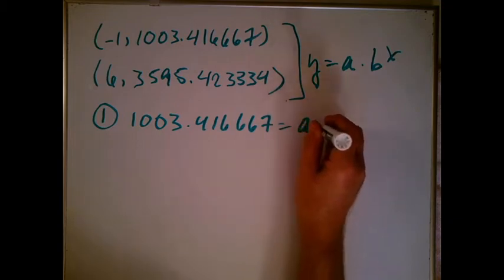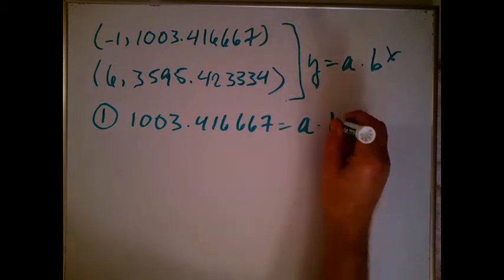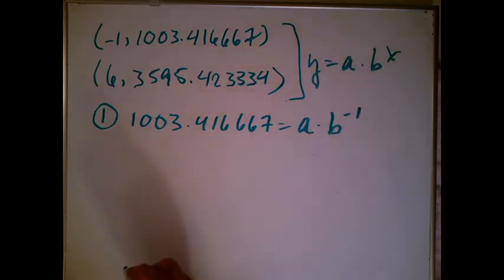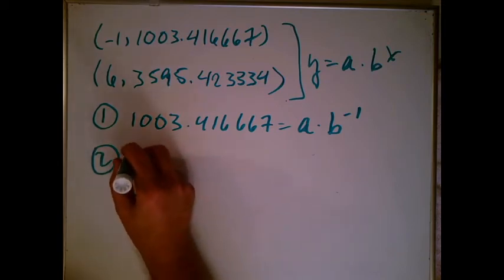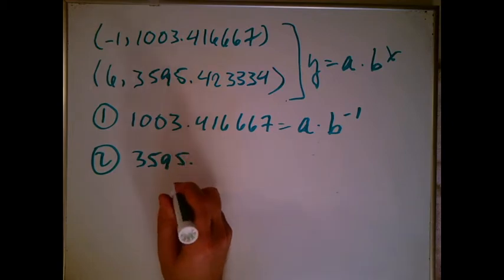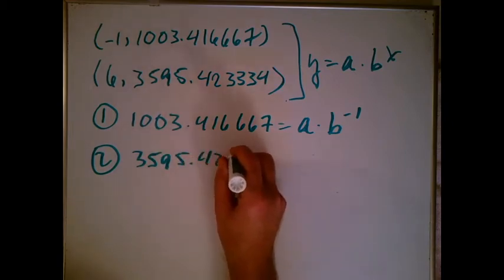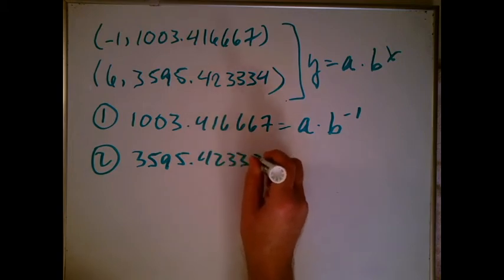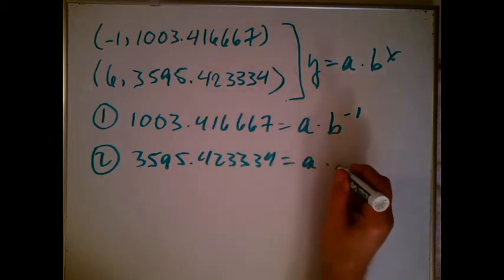I'm going to get 1003.416667 equals a times b to the minus one. And the second equation I'm going to get is going to be 3595.42334 equals a times b to the sixth.